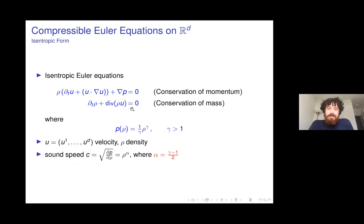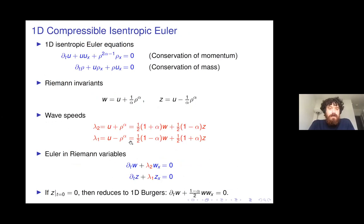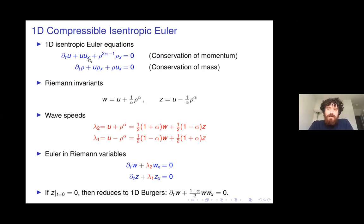We'll also look at the isentropic equations, where entropy is taken to be constant, giving just two equations. In the 1D case, with time and one spatial variable x, you can write the equations in terms of two Riemann invariants: U plus a multiple of the sound speed, and U minus a multiple of the sound speed. Writing the wave speeds as U plus rho-to-the-alpha and U minus rho-to-the-alpha, the equations reduce to two transport equations.